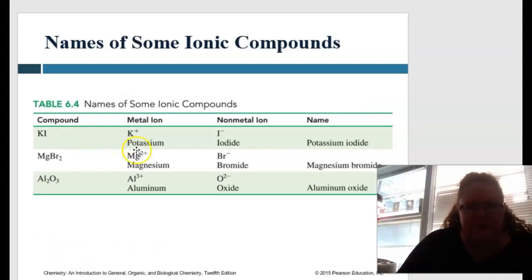So when we have potassium, and then with the iodide would be the non-metal, the compound would be KI. That would be the abbreviation for it, and it would be pronounced as potassium iodide. So then we have magnesium and bromide. Okay, so then putting it together, the metal's first, magnesium, bromide would be that. Same with aluminum oxide.